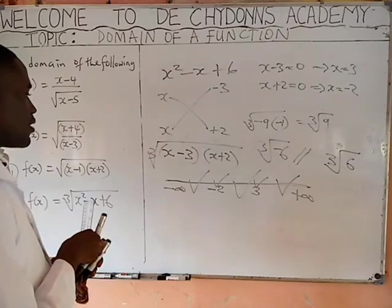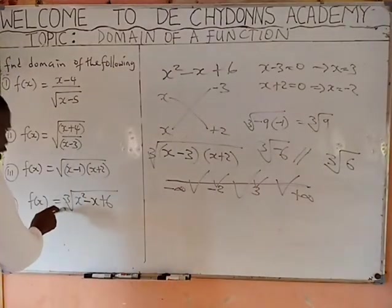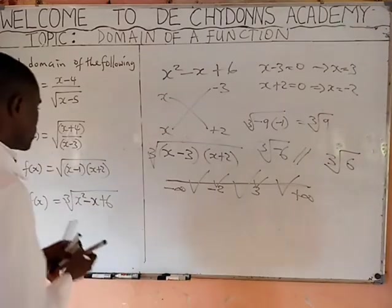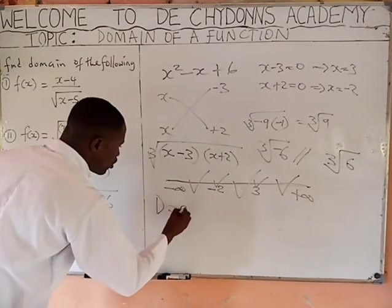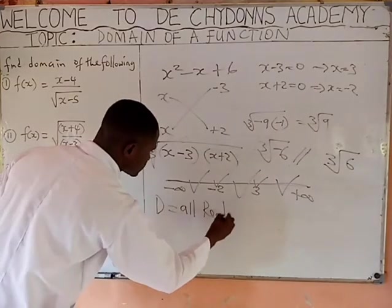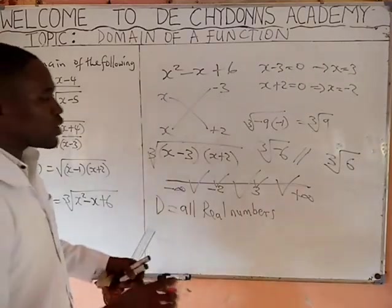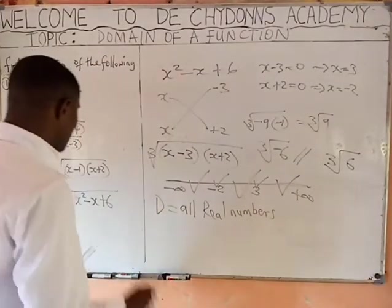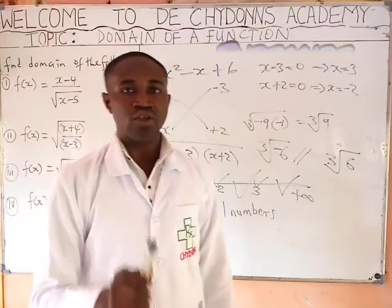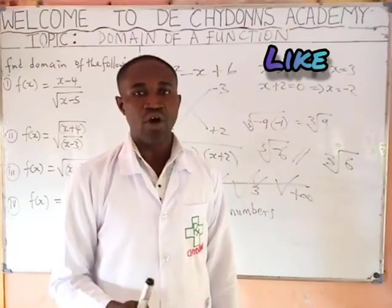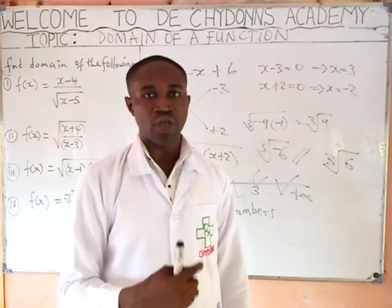Every point is defined. It means that when you have cube root of a quadratic expression, the domain will be all real numbers. So domain equals all real numbers. Whenever they say cube root of a quadratic equation, the domain of the function is all real numbers. Please don't forget to subscribe to our YouTube channel and like the video if you enjoy it. Thank you.